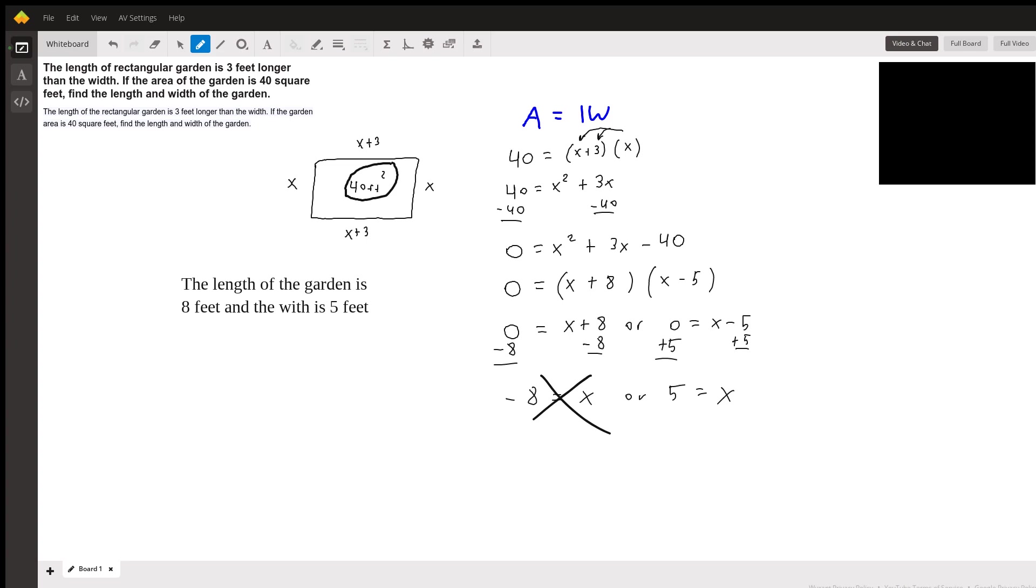All right. So from here, we're faced with a polynomial equation and you should be familiar with how to solve a polynomial equation if you're doing these types of quadratic word problems. You're just going to subtract 40 from both sides. We need to set it equal to zero. You can't solve a polynomial equation by factoring without setting it equal to zero. So that gives us zero equals X squared plus 3X minus 40. I kept the X squared term positive.